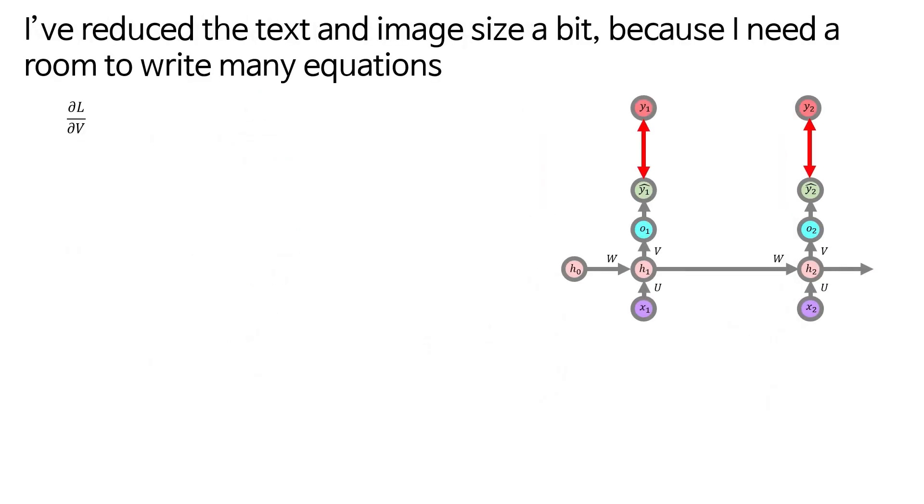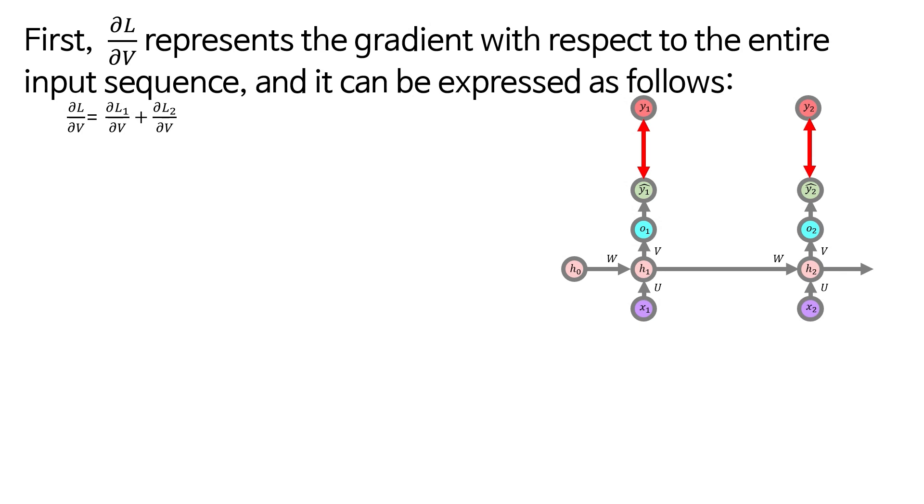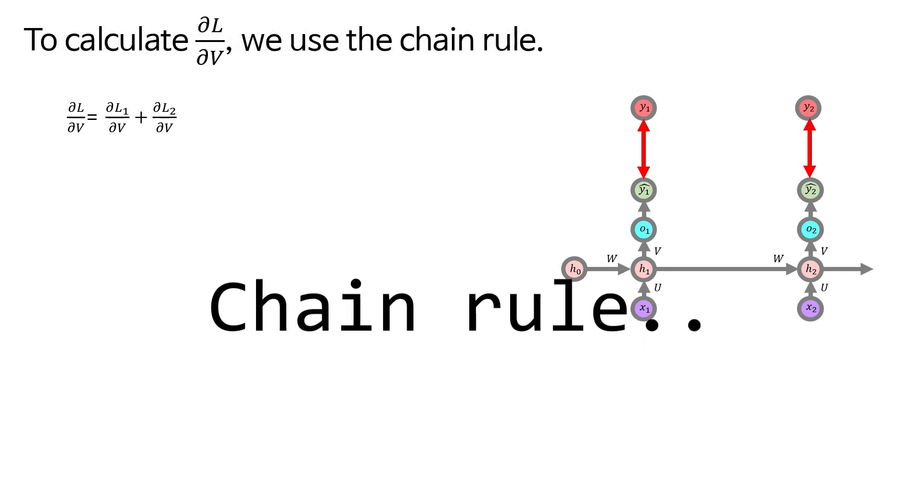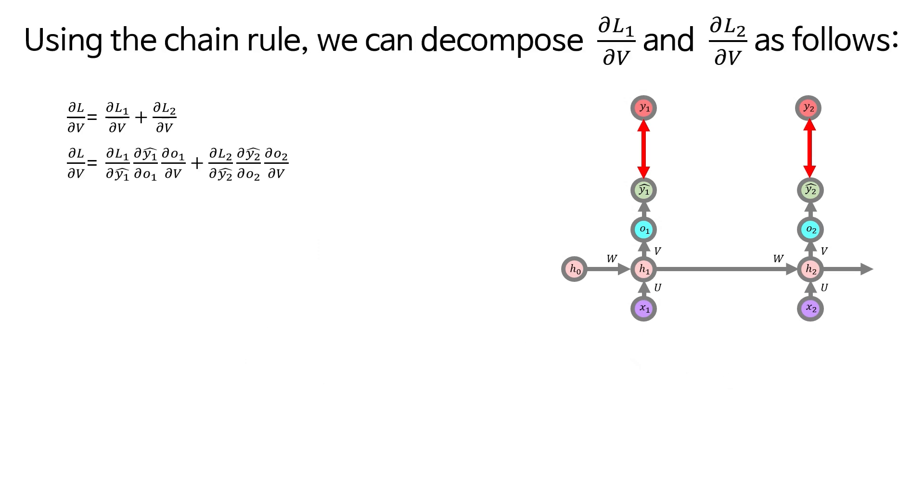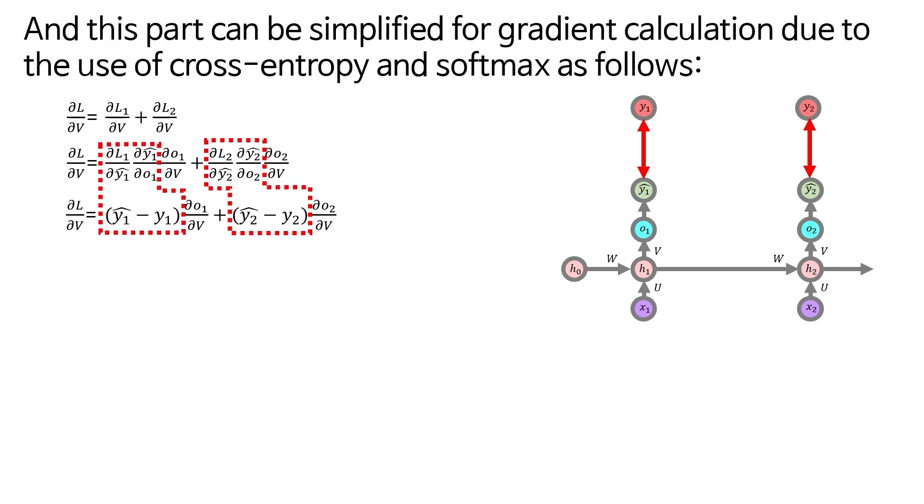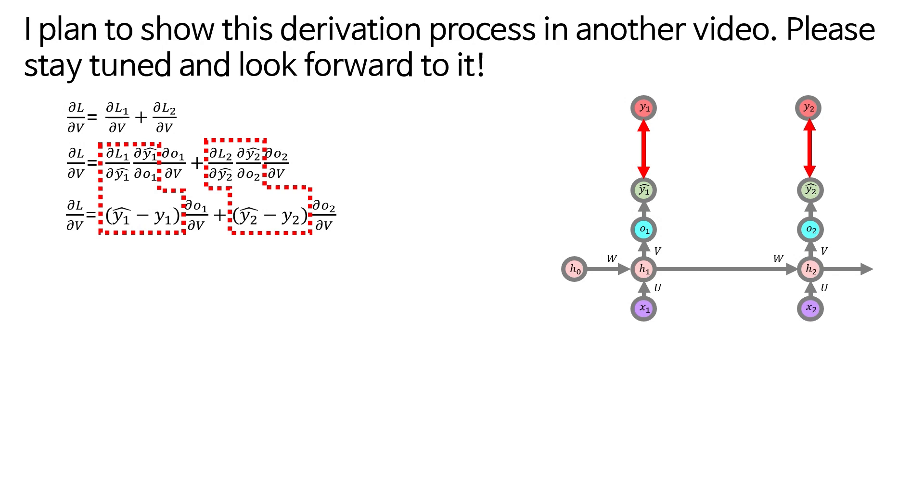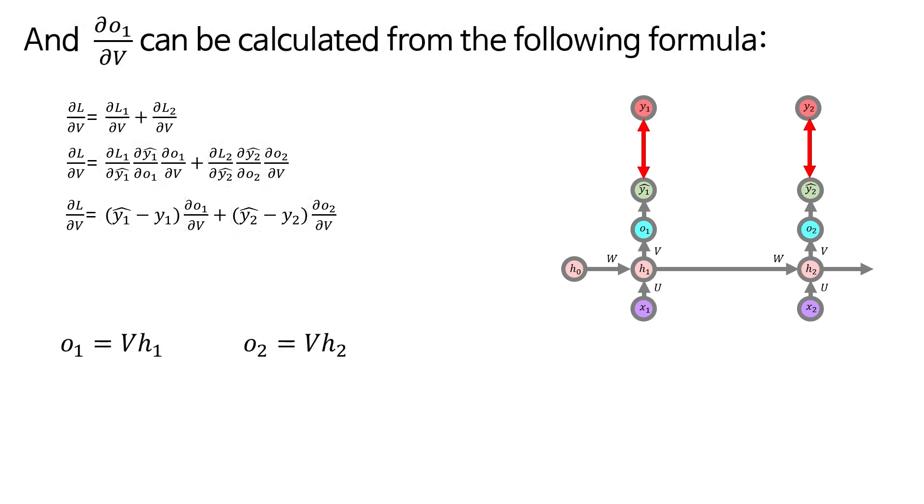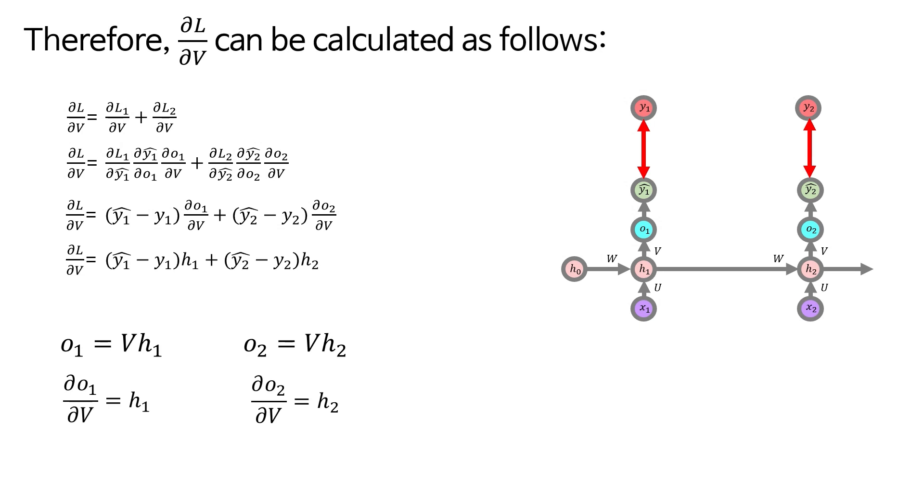I've reduced the text and image size a bit, because I need room to write many equations. First, del L del V represents the gradient with respect to the entire input sequence, and it can be expressed as follows. To calculate del L del V, we use the chain rule. Using the chain rule, we can decompose del L1 del V and del L2 del V as follows. And this part can be simplified for gradient calculation due to the use of cross entropy and softmax as follows. I plan to show this derivation process for this part in another video. Please stay tuned and look forward to it. And del L1 del V can be calculated from the following formula. Therefore, del L del V can be calculated as follows.